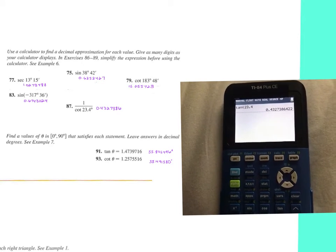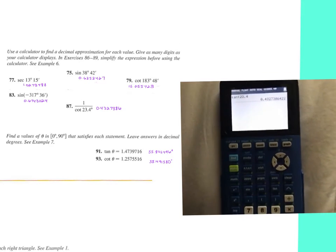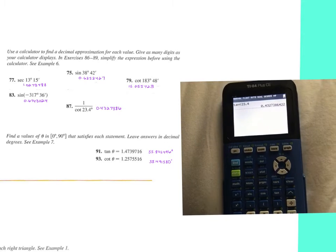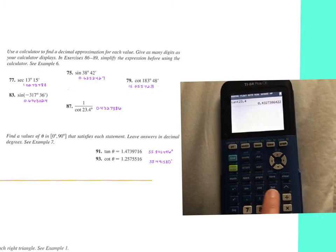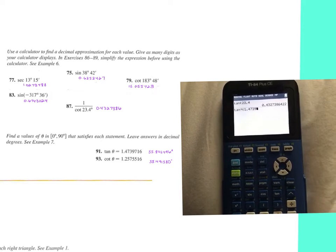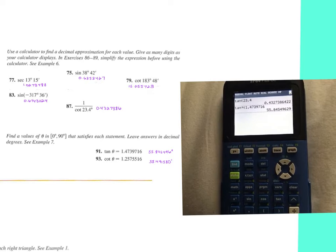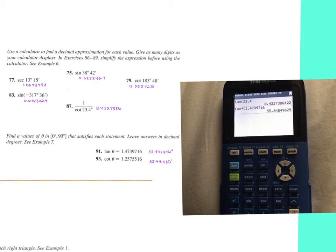For 91 and 93, they give you the trig function, and you're looking for the angle, so we hit the inverse buttons. I'm going to do second tangent to get tan negative 1, 1.4739716, enter, and there's my angle, and then cotangent.